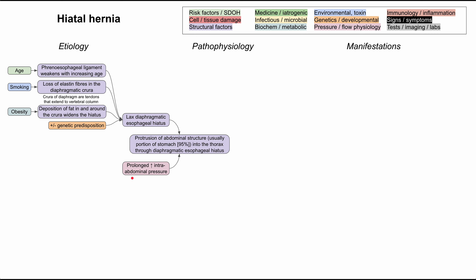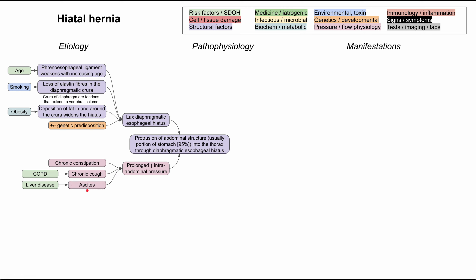Next, let's discuss the etiologies that cause increased intra-abdominal pressure. Chronic constipation is one — if you have a lot of stool in your bowel and you're constantly straining, that's high intra-abdominal pressure. If you have COPD and you're chronically coughing, that can increase intra-abdominal pressure over a long period of time. Liver disease like cirrhosis can cause ascites — fluid buildup in the abdomen — which increases pressure. And pregnancy, with a fetus growing in the uterus, can increase intra-abdominal pressure for a long time.